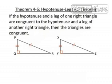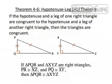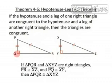This gives us Theorem 4.6, the Hypotenuse-Leg Theorem, which states that if the hypotenuse and a leg of one right triangle are congruent to the hypotenuse and a leg of another right triangle, then the two triangles are congruent. So here's what this looks like: if triangle PQR and triangle XYZ are right triangles, and segment PR is congruent to segment XZ, and segment PQ is congruent to segment XY, then triangle PQR is congruent to triangle XYZ.